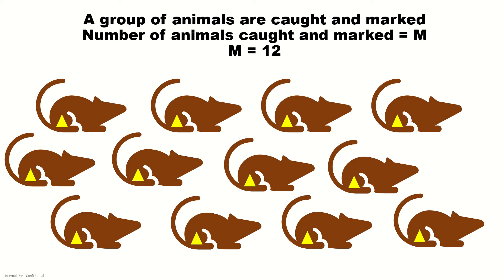The number of animals caught and marked will be denoted by M. Here you can count the number of rats. M is the number of marked animals — that is the number of animals caught and marked. M is equal to 12 in this example. The marked organisms are released back into the population and allowed enough time to mix with the unmarked organisms.